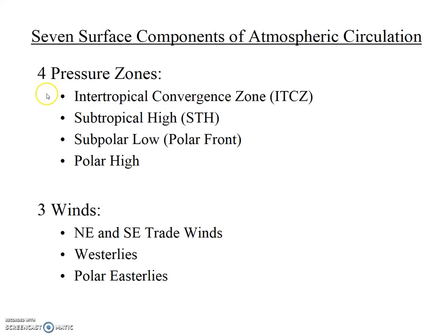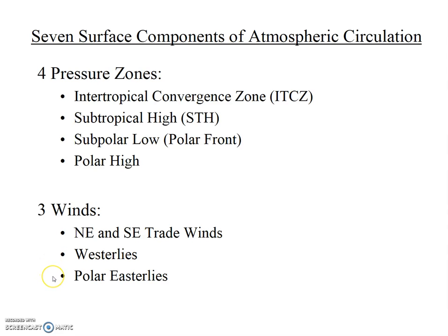The intertropical convergence zone occurs near the equator. Subtropical highs are located at or near 30 degrees north and south. The subpolar low — which your book calls the polar front — is located near 60 degrees north and south, and the polar high is located near the poles at 90 degrees north and south. The three winds always flow from high pressure to low pressure. The trade winds flow from the subtropical high to the intertropical convergence zone at the equator. The westerlies also flow from the subtropical high but towards the polar front. And the polar easterlies flow from the high pressure at the poles to the polar front.